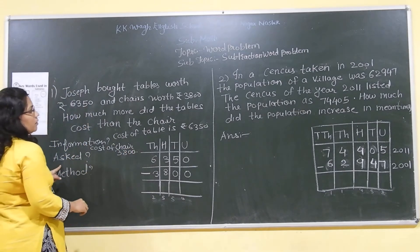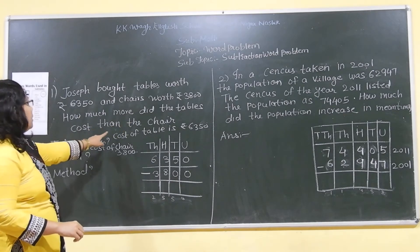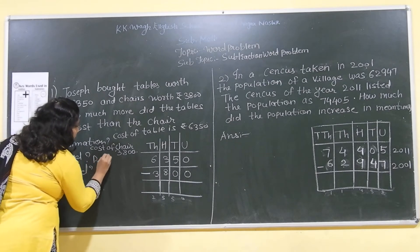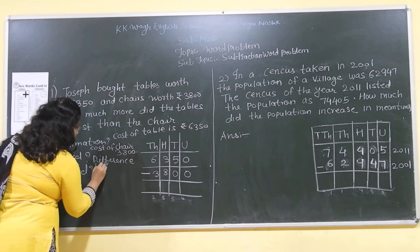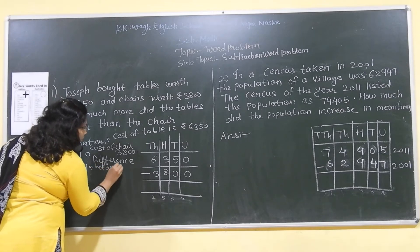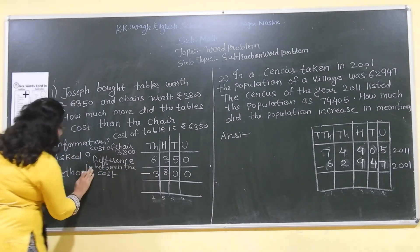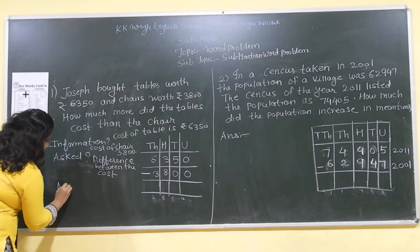Now what is asked? How much more did the table than the chair? What is asked? Difference, difference between the cost. Cost is asked. So, and which method? Which method is used? Method. Method.